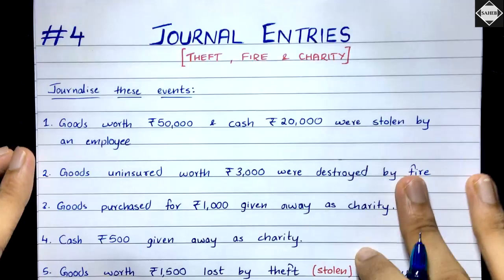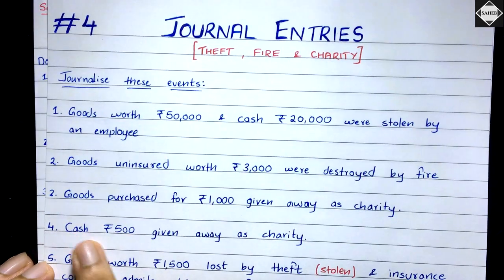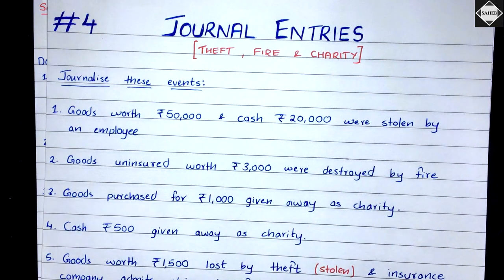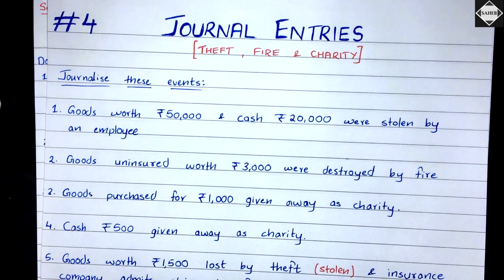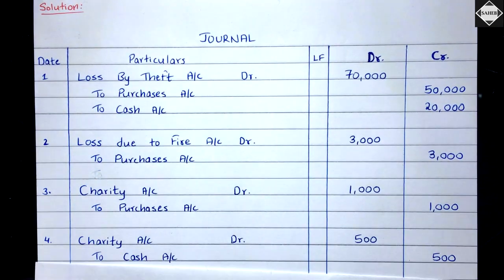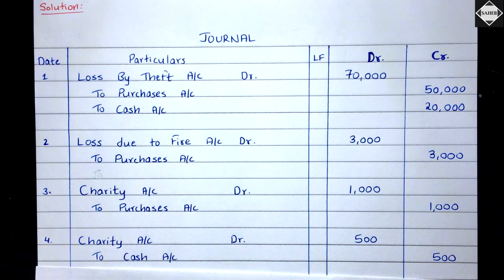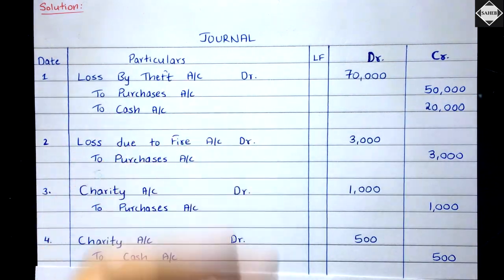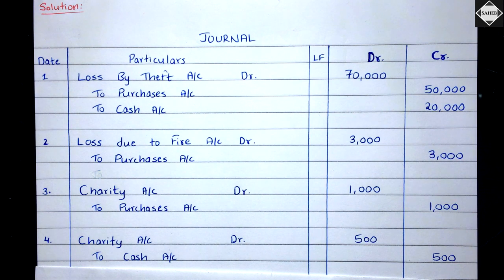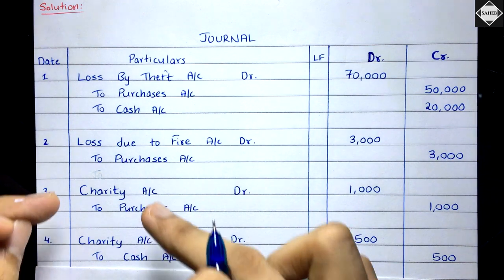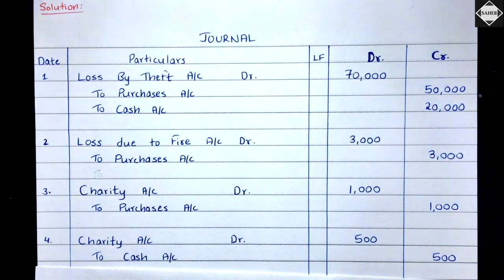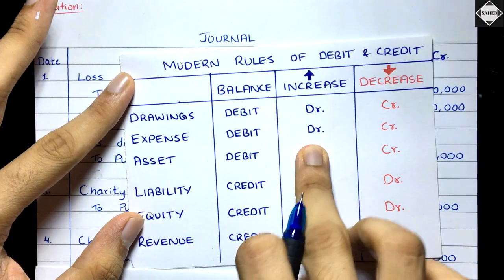The fourth transaction: cash rupees 500 given away as charity. Previously we gave goods so purchase account was involved; now we are giving out cash, so cash account is involved. Cash is decreasing — simply credit the cash account 500. Debit the charity account to recognize the charity expense. For example, if you pay rent, you recognize the rent expense by debiting rent account and crediting cash. Similarly, charity is an expense — you always recognize an expense by debiting it.